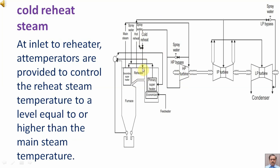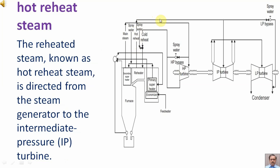At the inlet to the reheater, spray water is provided to control the reheat steam temperature to a level equal to or higher than the main steam temperature. The reheated steam, known as hot reheat steam, is directed from the steam generator to the intermediate pressure turbine.